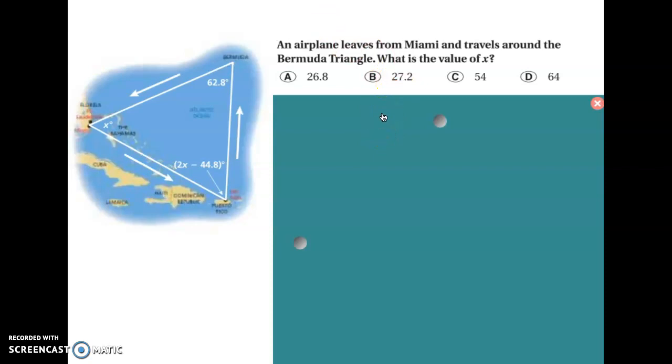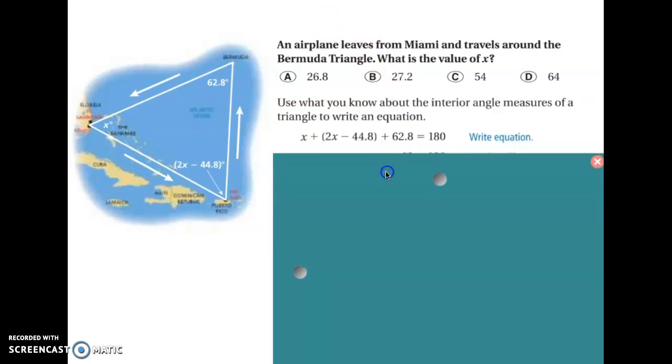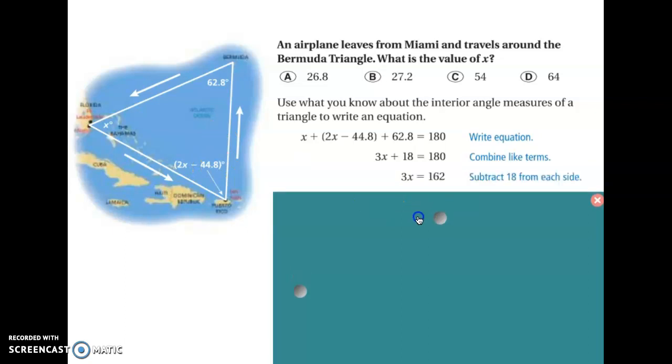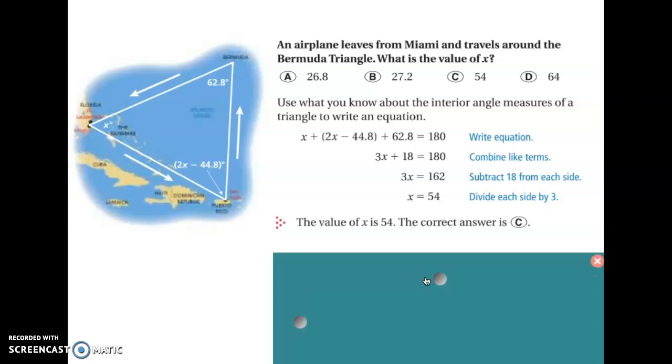So, let's take a look what we did here. We just really set everything equal to 180, because remember that the interior angle sum of a triangle should be 180 degrees. So, we wrote the equation. We just copied everything from inside the triangle. Now, we combined like terms, subtracted 18 from each side. We divided each side by 3, and we got 54. So, X is equal to 54. So, that is C is the correct answer there.